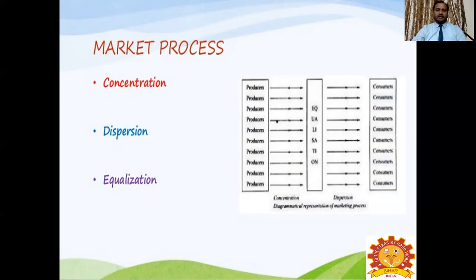The first step in marketing process is concentration — the first process of marketing. Concentration aims at the collection of products at a center place. The product from different farmers is collected to a center place — collecting different varieties of goods produced at different places by different farmers. Each and every farmer contributes to the center place, and the product will be in bulk there.